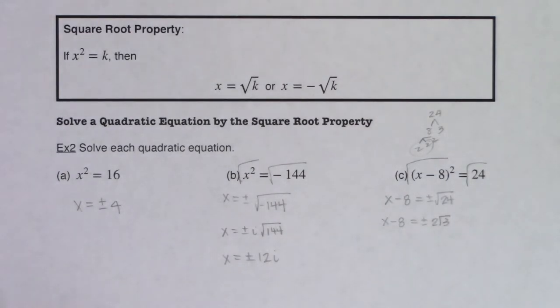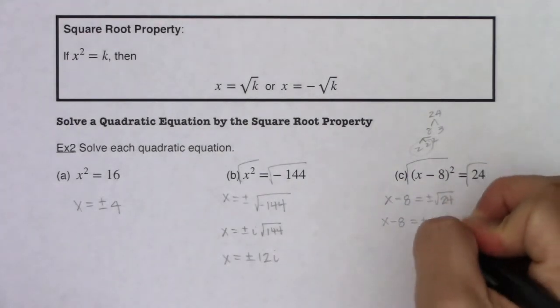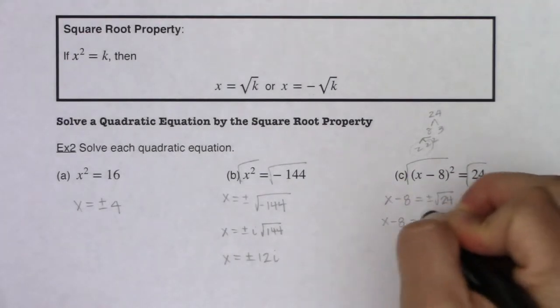All right. And the only thing, oh, that's not true, it's not 2 root 3, excuse me, a 2 and a 3 were left under the radical. So it's plus or minus 2 root 6.